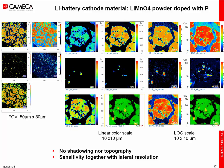Finally, lithium batteries are another good application. The NanoSIMS can map light elements like lithium — ranging from hydrogen up to plutonium and other heavy elements. Here, on lithium manganese oxide powder doped with phosphorus, on the left you have a large image of 50 by 50 microns, and on the right zoomed images of lithium, oxygen, phosphorus, sulfur, nickel, and an overlay of lithium together with the dopant phosphorus. The same images are also displayed in logarithmic color scale because the NanoSIMS has a uniquely high dynamic range — on the oxygen images, you can have several tens of thousands of counts on each single pixel. Thank you very much for your attention, and I welcome your questions.